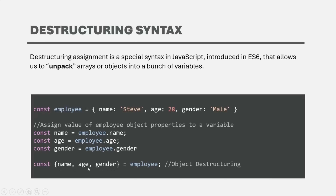In object destructuring syntax, we first use let or const keyword to create variables. Use let if you are going to change the value in the future, or const if you are not. Inside curly braces, we specify the variable names. Remember: for array destructuring we use square brackets, but for object destructuring we use curly braces. An important point to remember is that for object destructuring, the variable name must match the property name whose value you want to assign.